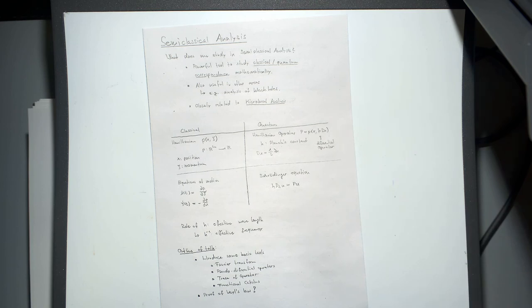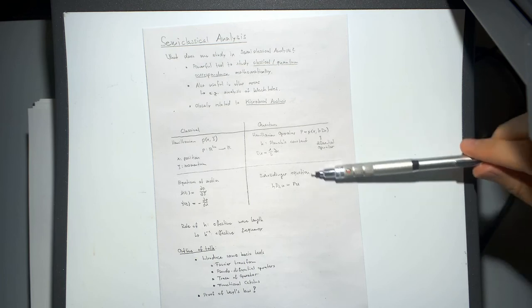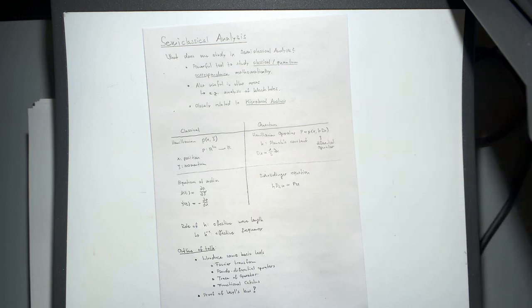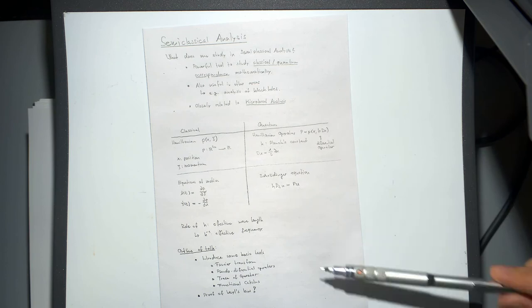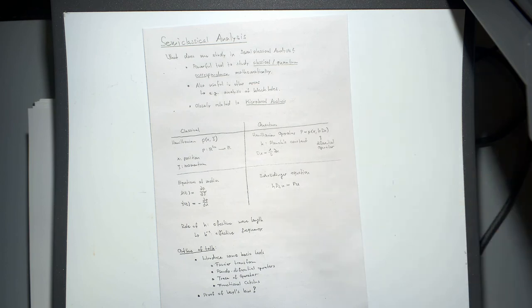Semi-classical analysis wants to analyze how these equations — possibly the Schrödinger equation, possibly some other quantum mechanical equation — behave when we vary H. This H has the role of an effective wavelength. So you can imagine that if we have some other wave-type phenomenon, we can also use semi-classical analysis to study it.